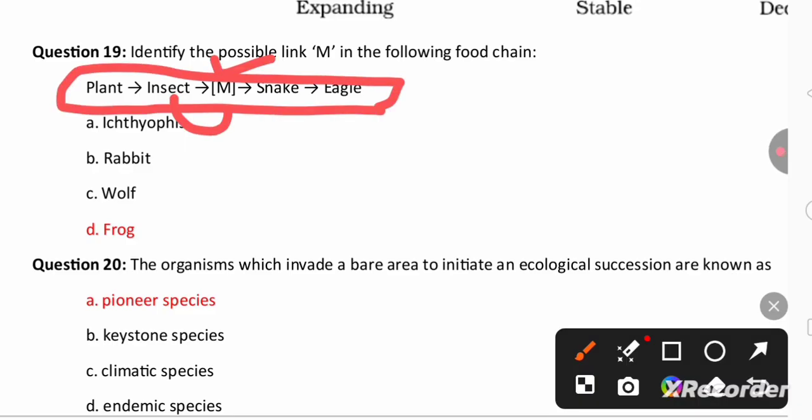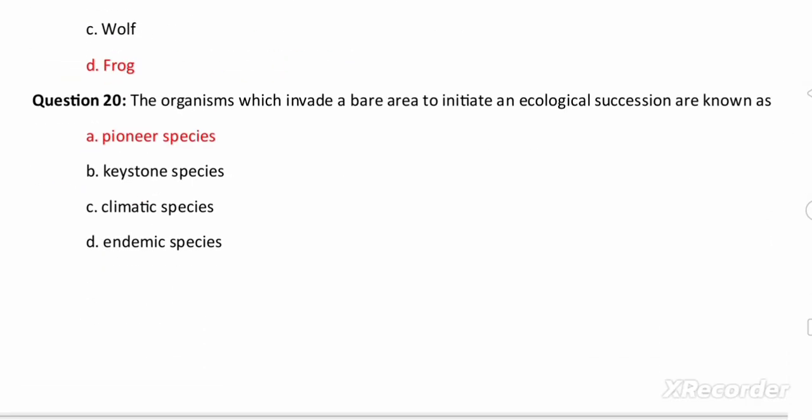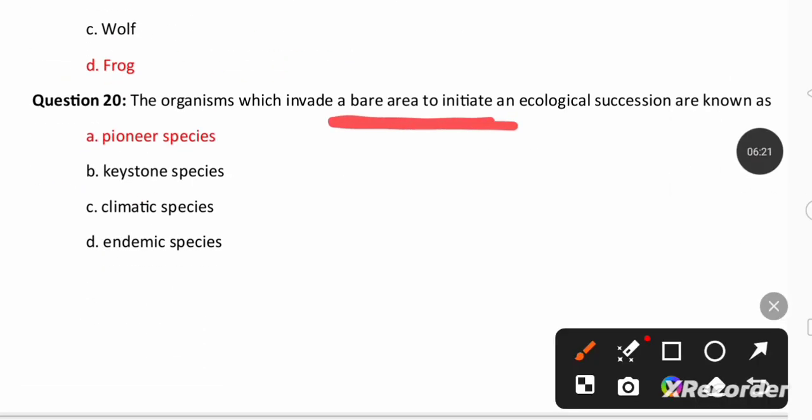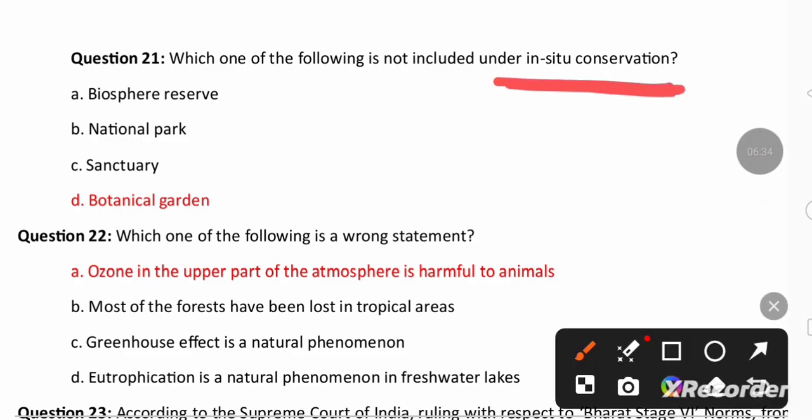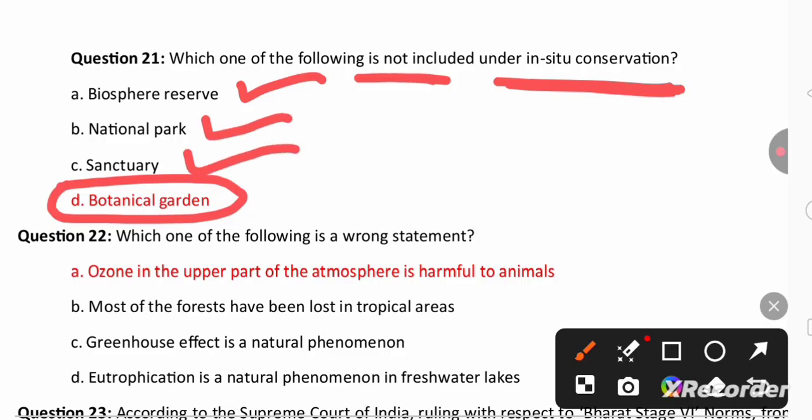Next: in the following food chain here M is missing. The M is after insect then M will be frog. Next question: the organism which invade bare area to initiate ecological succession, that organism is called as pioneer species as it is going to invade in the bare area. Which one of the following is not included under in situ conservation? Not included is botanical gardens. Remaining biosphere reserve, national park and sanctuaries are the in situ conservation examples.